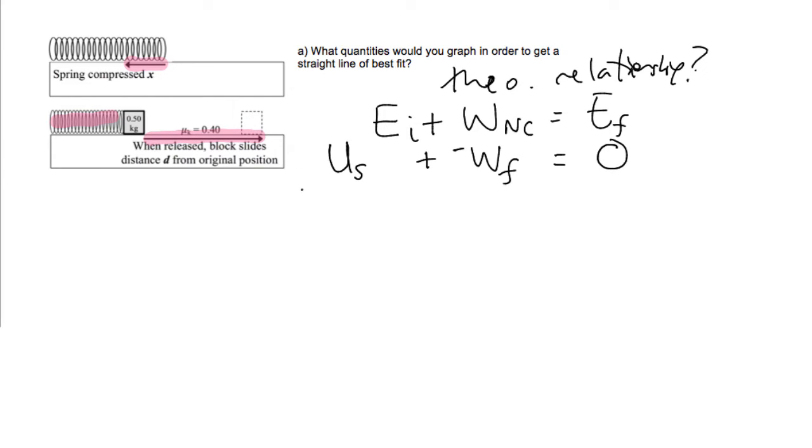Now I'm just going to get more specific. The spring potential energy is one-half kx squared plus the work of friction. Well, that is going to be negative because it's doing negative work. It's slowing the object down. That is going to be the force of kinetic friction times d, which is the distance that the object slides.